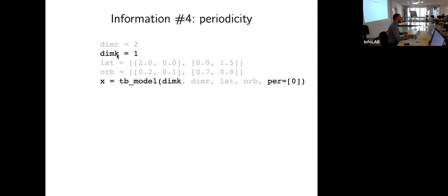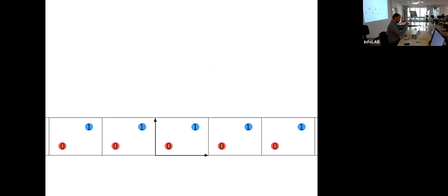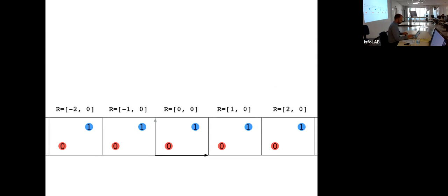You can also specify periodicity as 1, so only one dimension is infinite. Here I specified the periodic direction as 0 — so the first lattice vector is periodic — giving a tight-binding model that stretches in one direction only. The perpendicular vector is no longer used to repeat the system; it's only used to specify orbital coordinates in the vertical direction. The home cell has coordinates zero-zero; the unit cell on the right has coordinate one-zero, two on the right is two-zero, and so on.